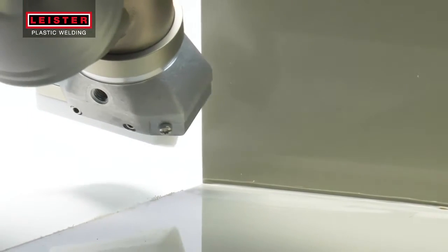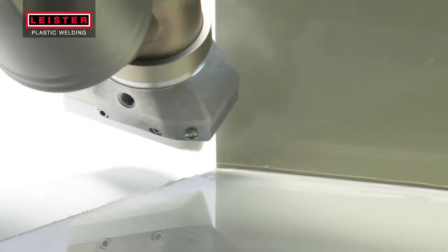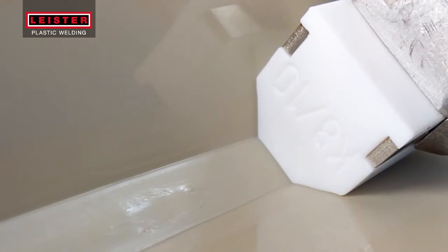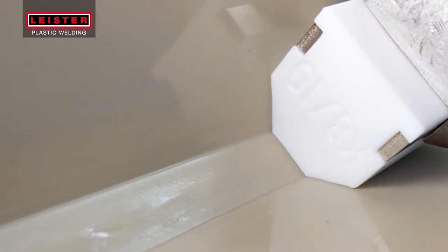Preheat the area where the welding begins. Hold the extrusion welder at a right angle while pressing the trigger to engage the drive motor at the same time. Move the welder forward at a constant speed and pressure along the areas to be joined.